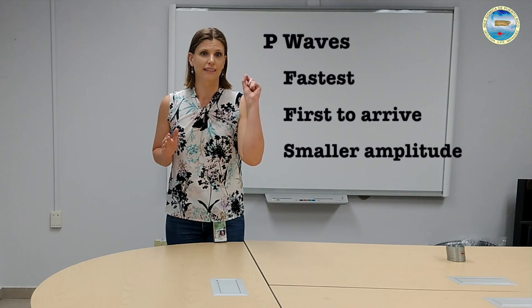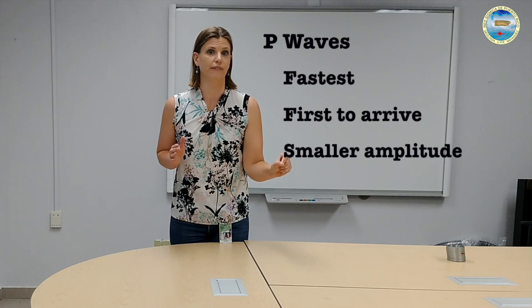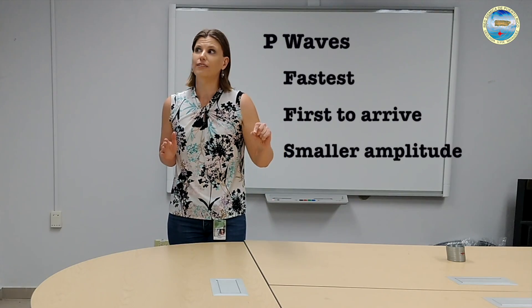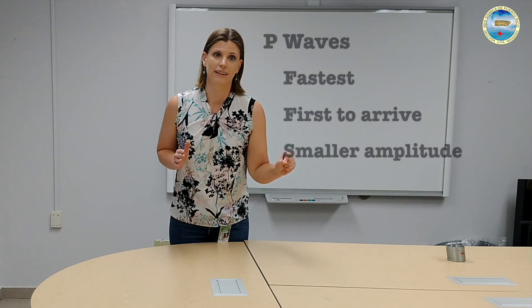When an earthquake occurs, these waves all move at different rates. The one that's the rabbit in the race is the P wave — it's the fastest and the first to arrive. However, the P wave also tends to have a smaller amplitude, which means it's the wave that people don't necessarily feel.